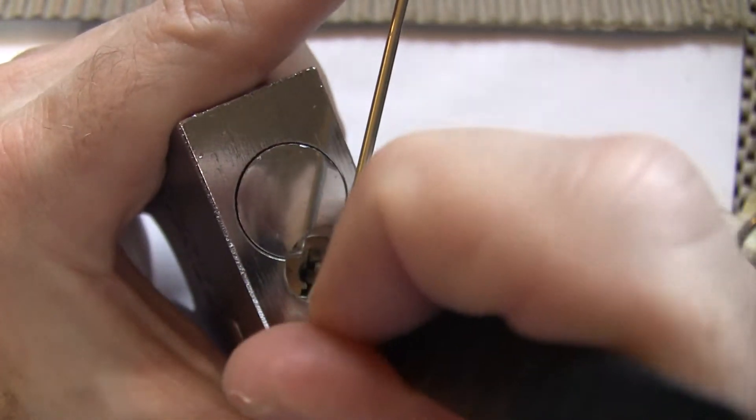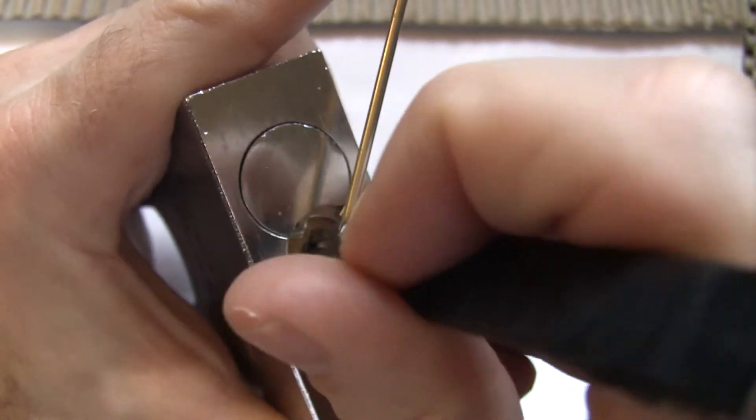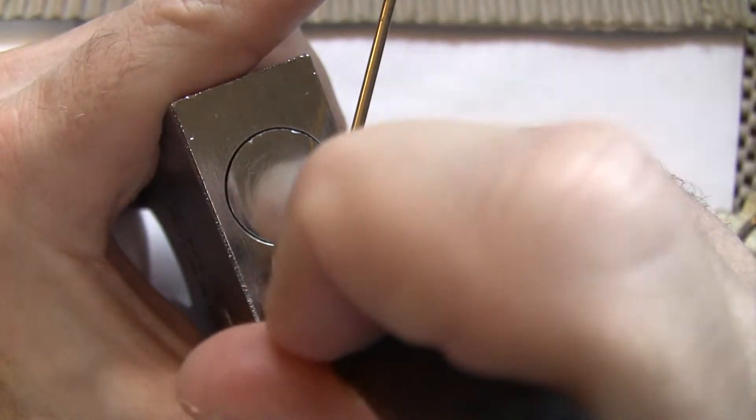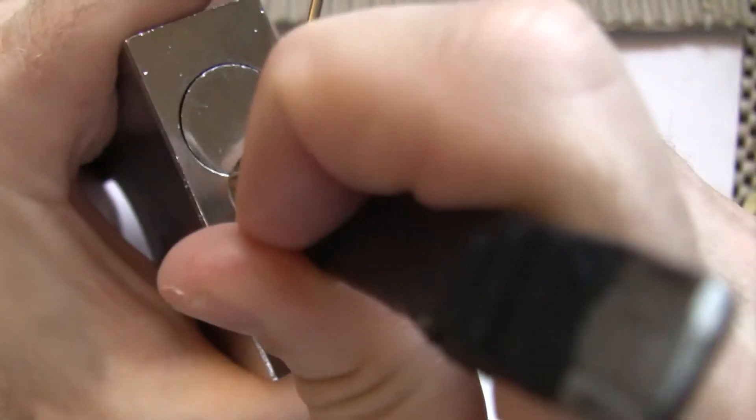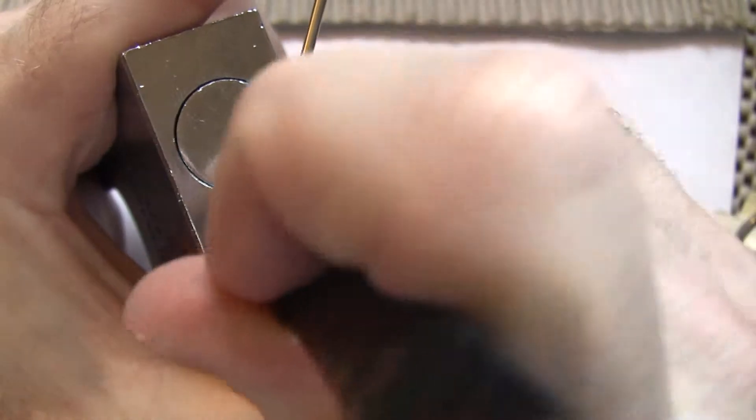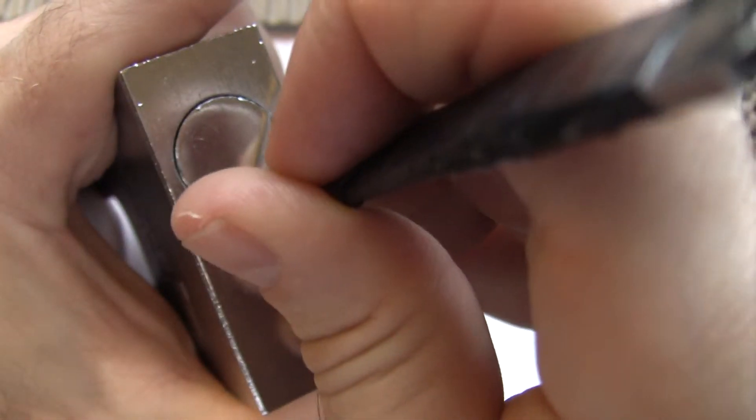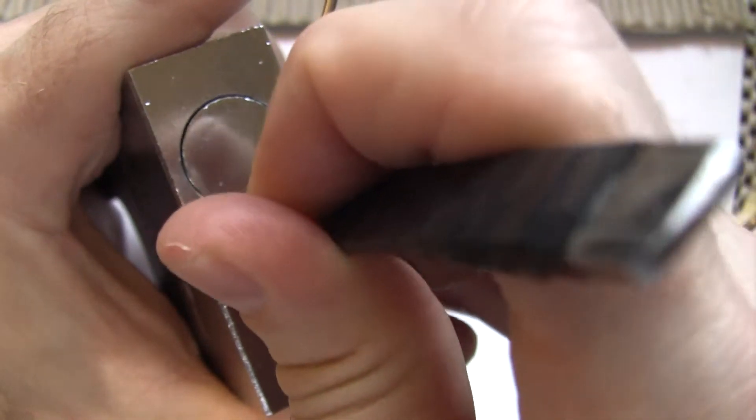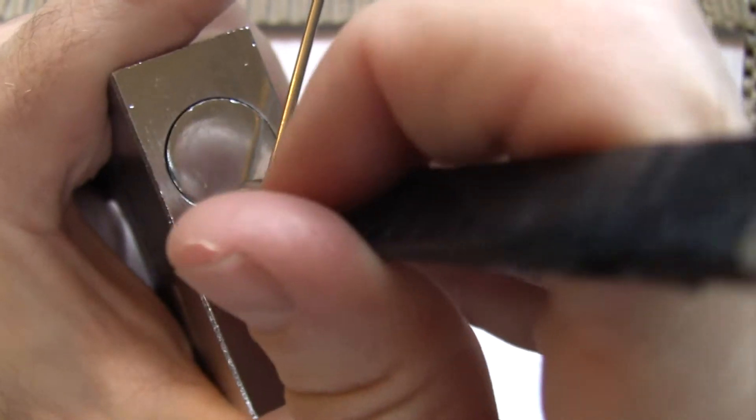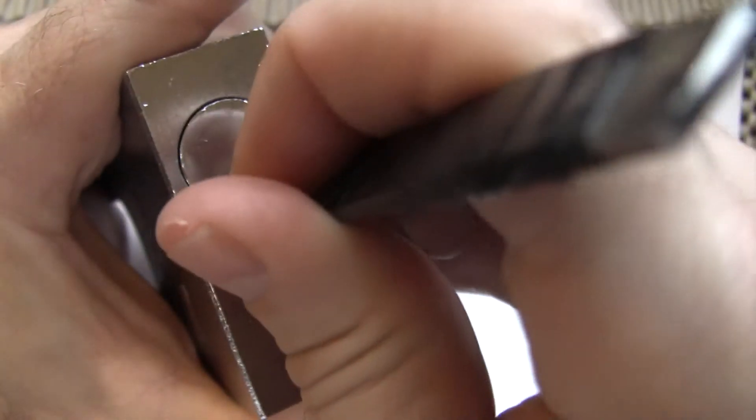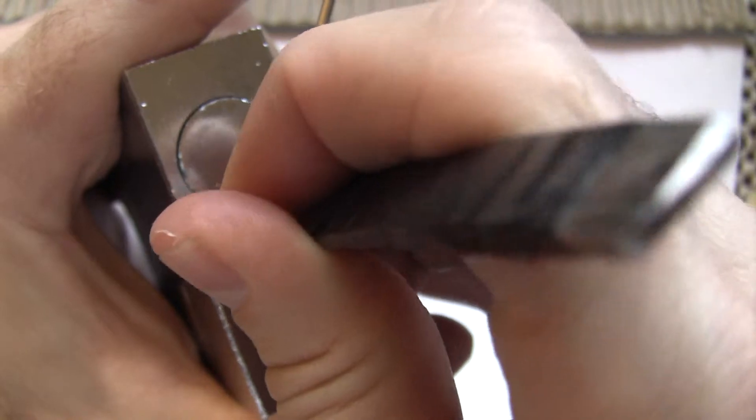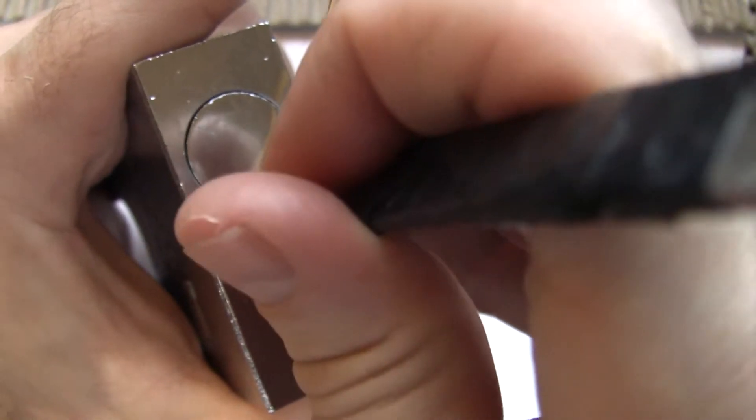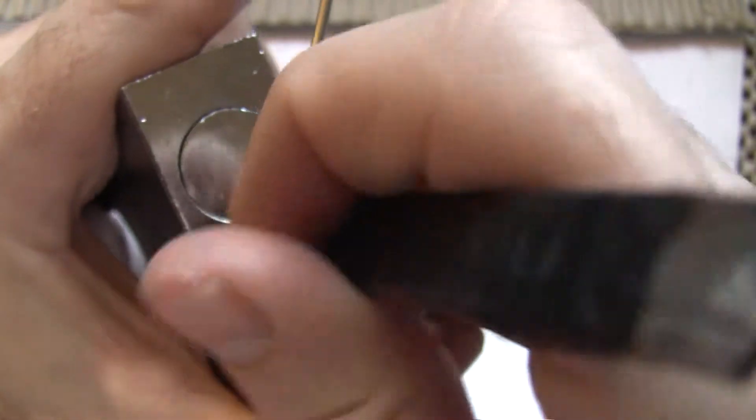Quite a few serrated pins in this lock. That crunchy serrations popping up. Like most of these American padlocks, this will have serrated key pins as well as some serrated drivers and maybe a spool or two in there.